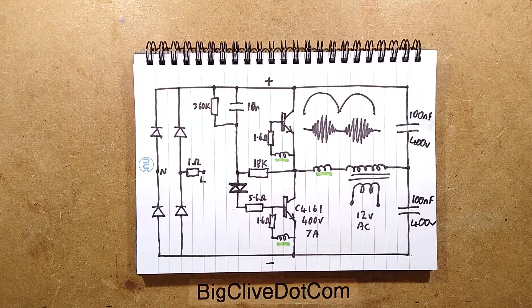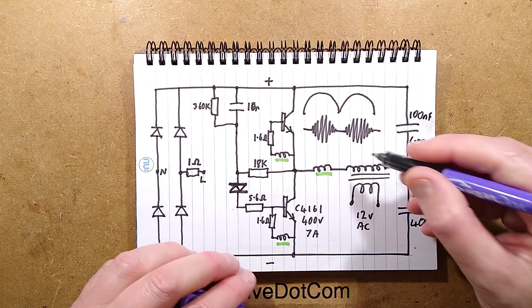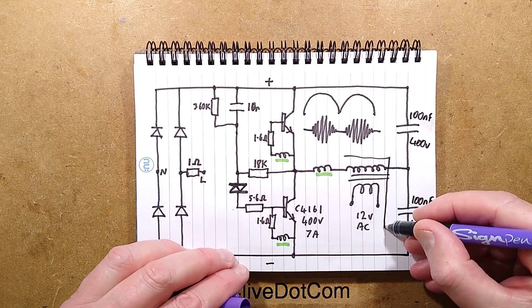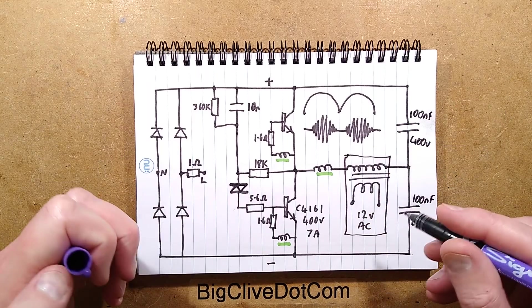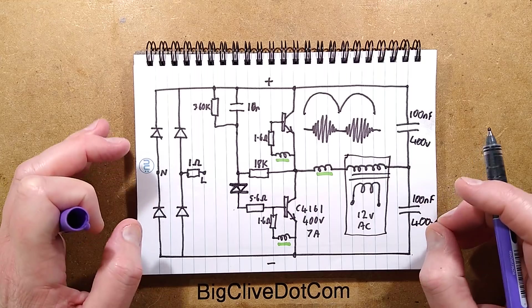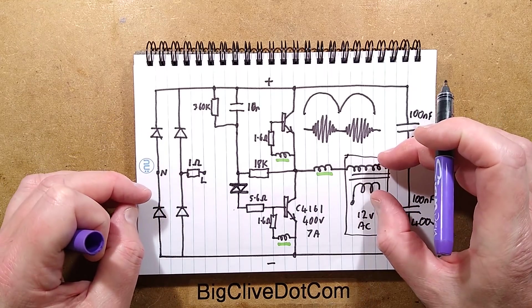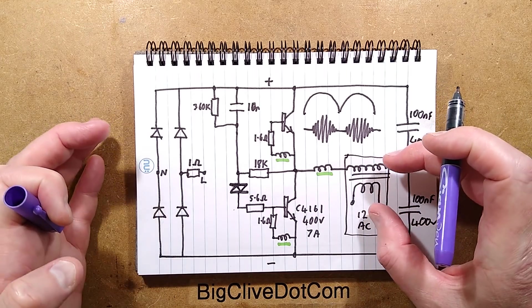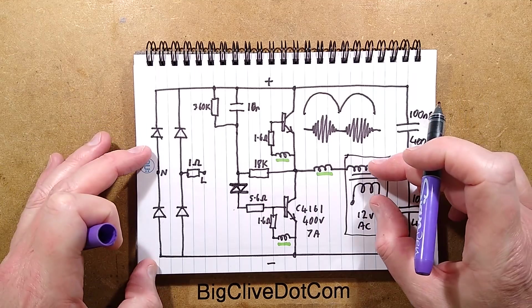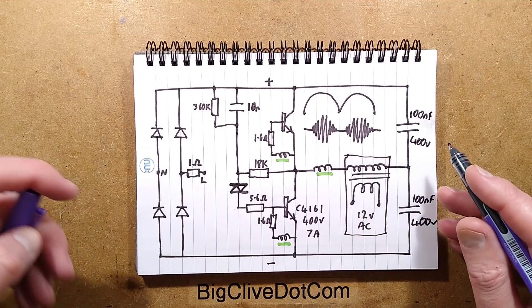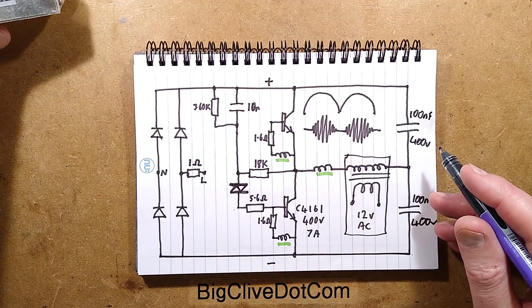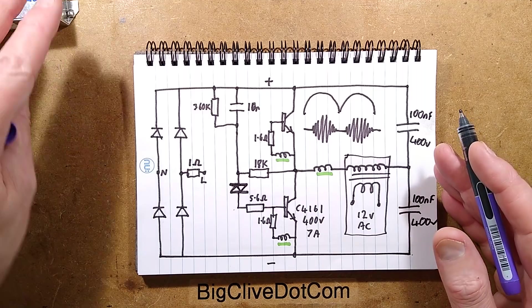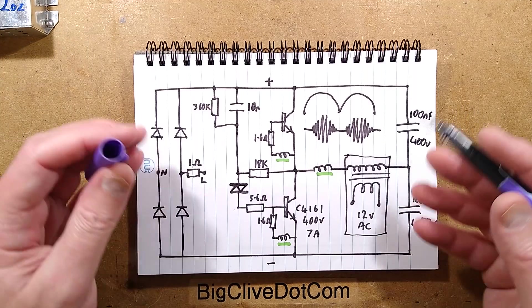So here's the principle of operation. This is the main transformer that converts the mains voltage to the low voltage. By using a small transformer they save a lot of weight, but they have to drive it at very high frequency. These things operate at ridiculous frequencies, I would guess probably 30 kilohertz, somewhere between 20 and 40 kilohertz.